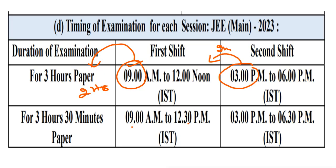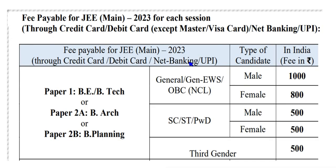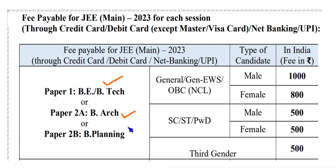We will go to JEE Main. Who will get the fees? You will get Paper 1, Paper 2A, and Paper 2B. You will get BE and BTech in Paper 1. You will get BArch. You will get BPlanning. You will get the general exam.